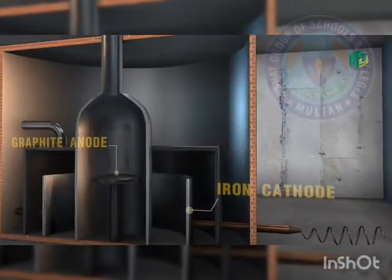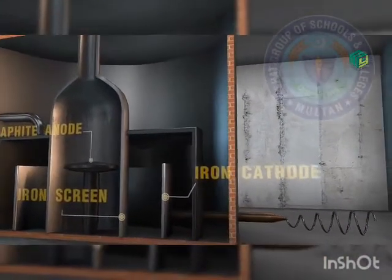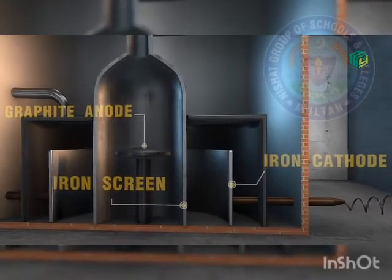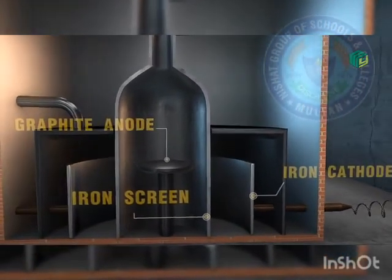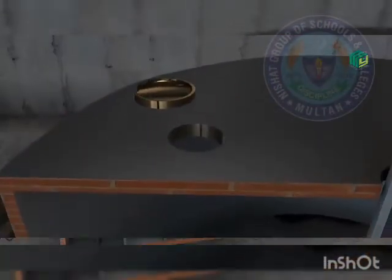And around the anode there is a circular iron cathode. Between iron cathode and graphite anode there is a steel screen or iron screen which is used to prevent the intermixing of sodium metal and chlorine gas.